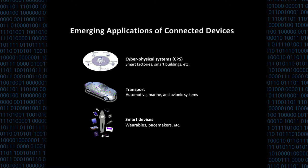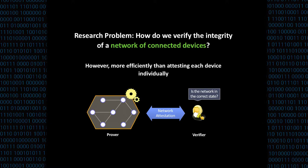Current industrial trends envision systems formed of a really large number of devices. Examples include cyber-physical systems such as smart factories, building and office automation, transport such as automotive and marine systems, and smart devices such as smart gadgets and pacemakers.